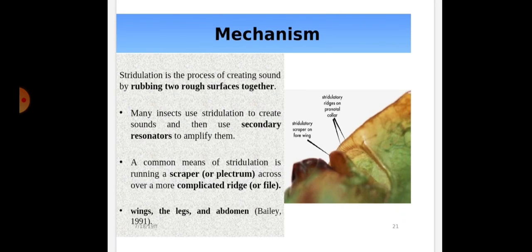How do the stridulatory organs function? Stridulation is the process of creating sound by rubbing two rough surfaces together. Many insects use stridulation to create sound and then use secondary resonators to amplify them. A common means of stridulation is running a scraper or plectrum across a more complicated ridge or the file.